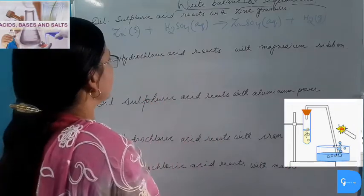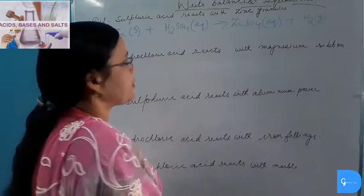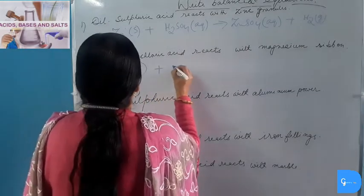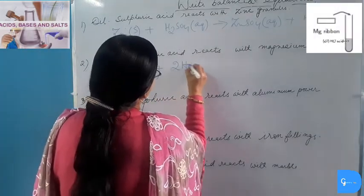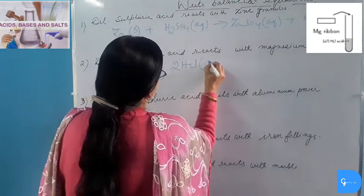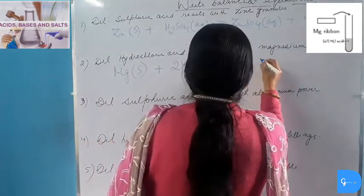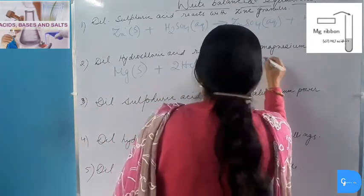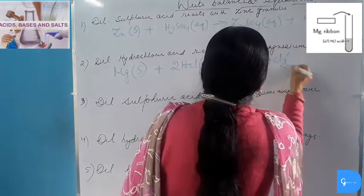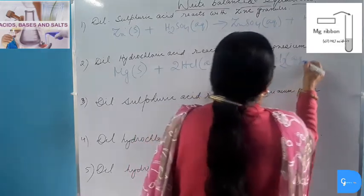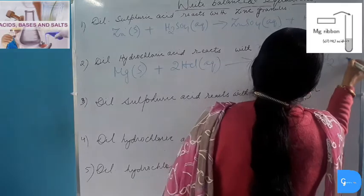Dilute Hydrochloric Acid reacts with Magnesium Ribbon (solid): Mg(s) + 2HCl(aq) → Magnesium Chloride (aqueous) plus Hydrogen gas.